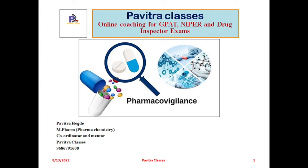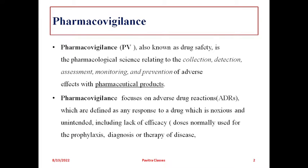Good morning, welcome to our class. The new topic is pharmacovigilance. What is pharmacovigilance, when did it exist, and what is its importance? Pharmacovigilance, also known as drug safety, is a pharmacological science relating to the collection, detection, assessment, monitoring, and prevention of adverse effects of pharmaceutical products. After a product is formulated and marketed, pharmacovigilance collects and monitors adverse reactions.